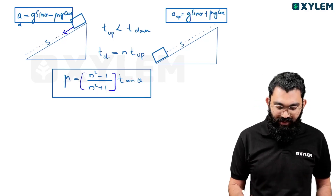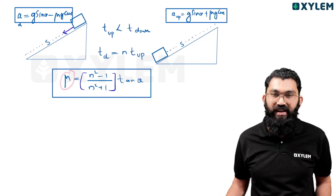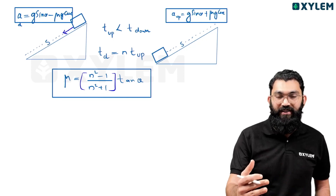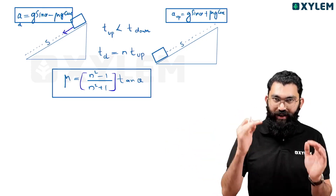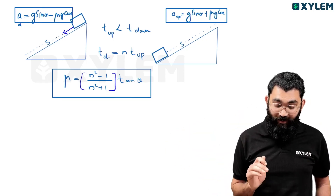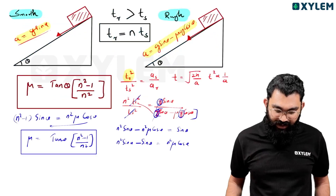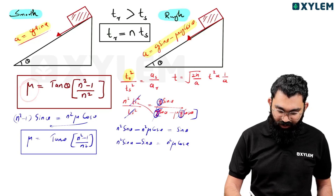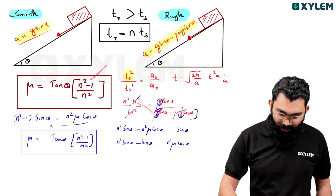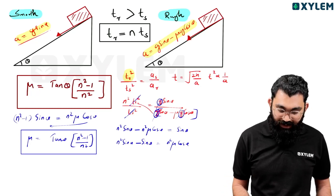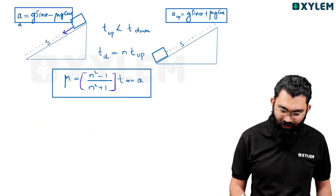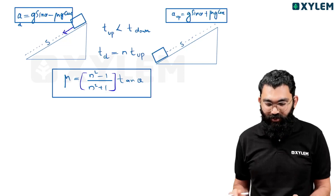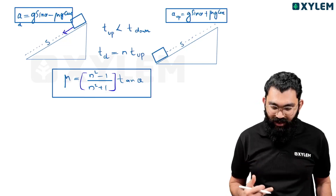So tan θ is common to both cases. Comparing the two formulas: for one smooth and one rough surface with time ratio n, μ equals tan θ times (n² minus 1) divided by n². For ascent and descent on one rough surface with time ratio n, μ equals tan θ times (n² minus 1) divided by (n² plus 1). Note the denominator difference: n² versus n² plus 1.